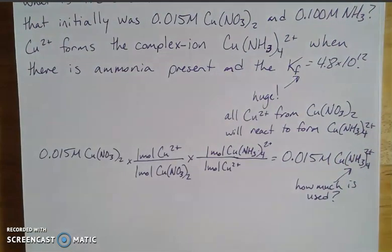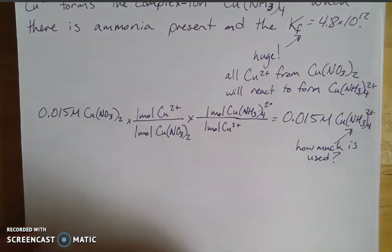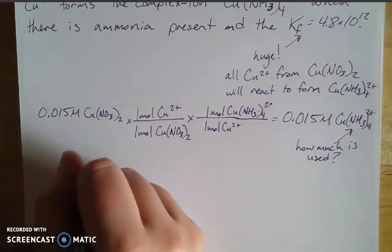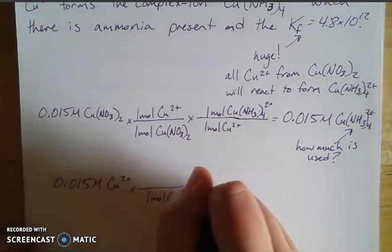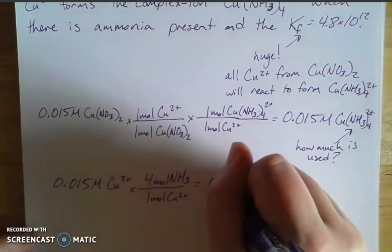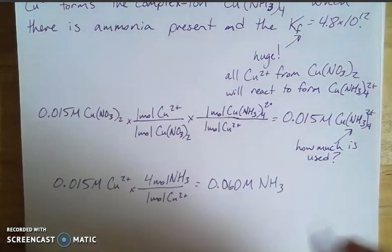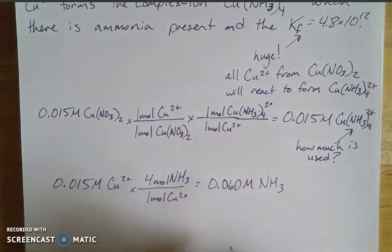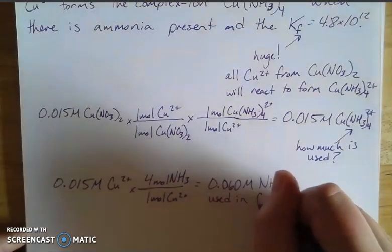So the next step of my logic is, how much of my ammonia is used up? Because I want to know how much is left in solution when I start to think about my ICE box calculations. So if I'm using 0.015 moles of my copper, and for every one mole of copper I need four moles of ammonia, then that means that in order to form that complex ion, I've used up this much of my ammonia, my 0.060 moles or molarity, it's all per one liter because we're not given volumes. This is how much that I've used up in the formation of my ion.